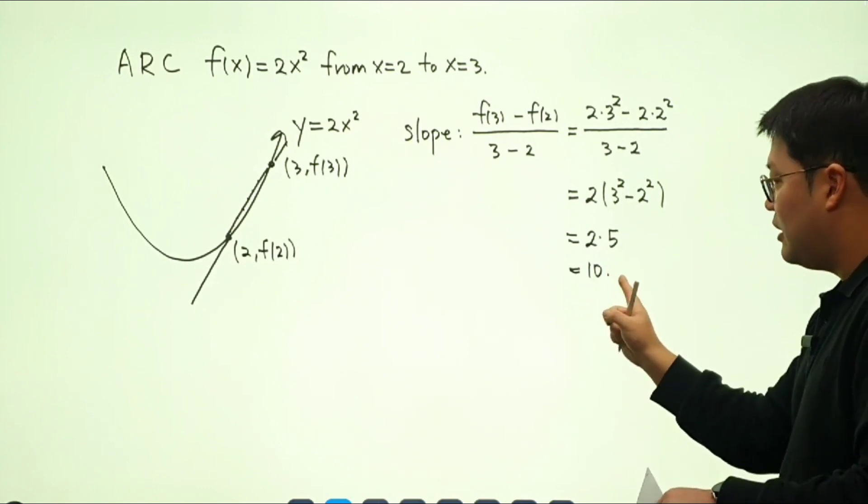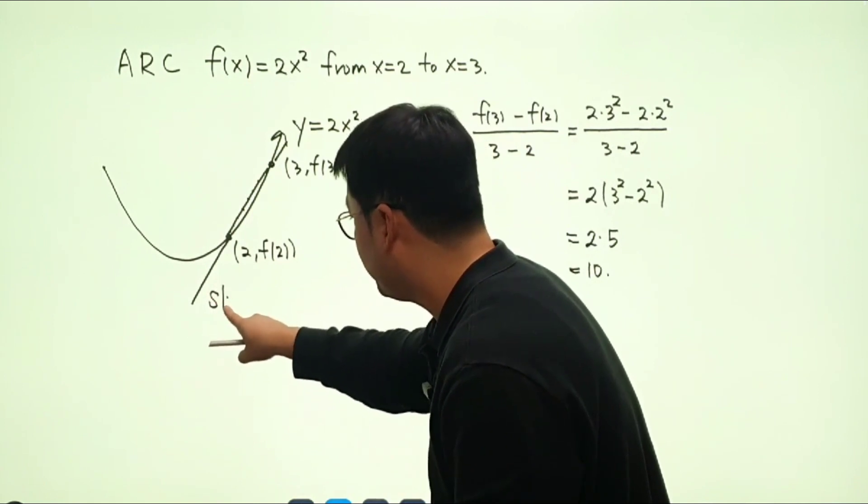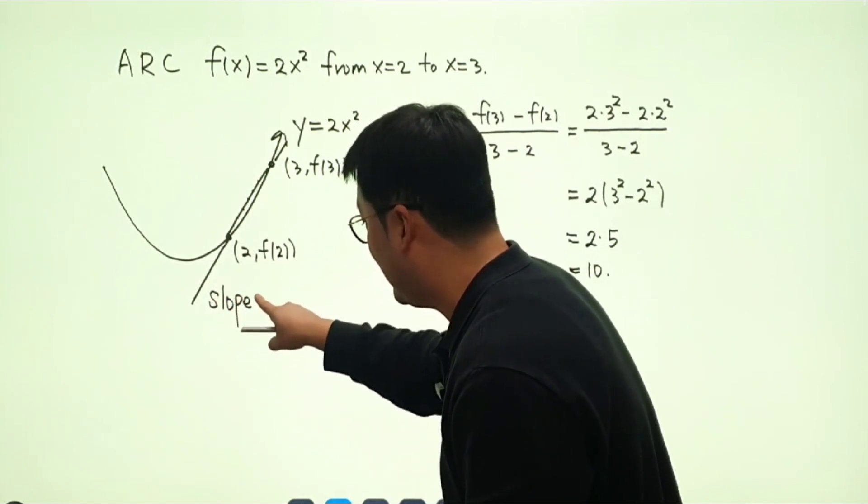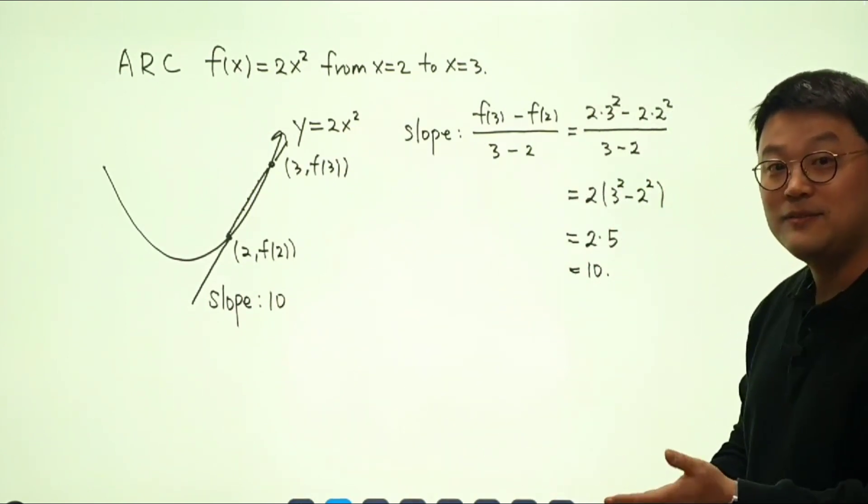So let's just try to analyze the meaning of this 10. It means that the slope of that line becomes positive 10. And it looks steep though, right? So that shall be it.